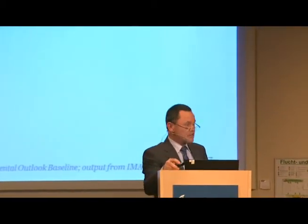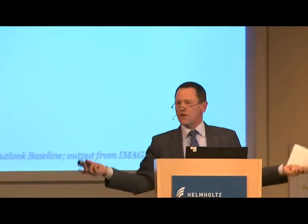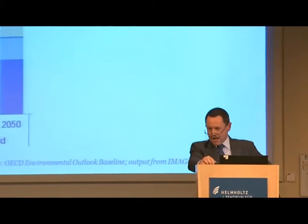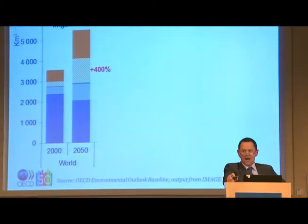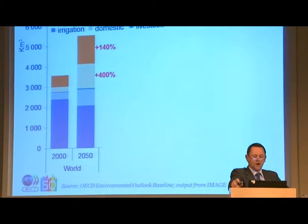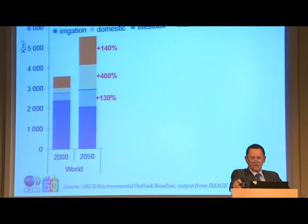We're looking at a world that currently demands around three and a half thousand cubic kilometres of water. The bulk has historically been used for agriculture and food production - irrigation - to which we add domestic uses, a little for livestock, a certain amount for manufacturing, and a certain amount for electricity. In our baseline projection with no policy changes and a quadrupling of the economy, that rises to five and a half thousand cubic kilometres. There are some enormous increases: a 400% increase in demand from manufacturing, a 140% increase from electricity, and 130% for domestic water use.